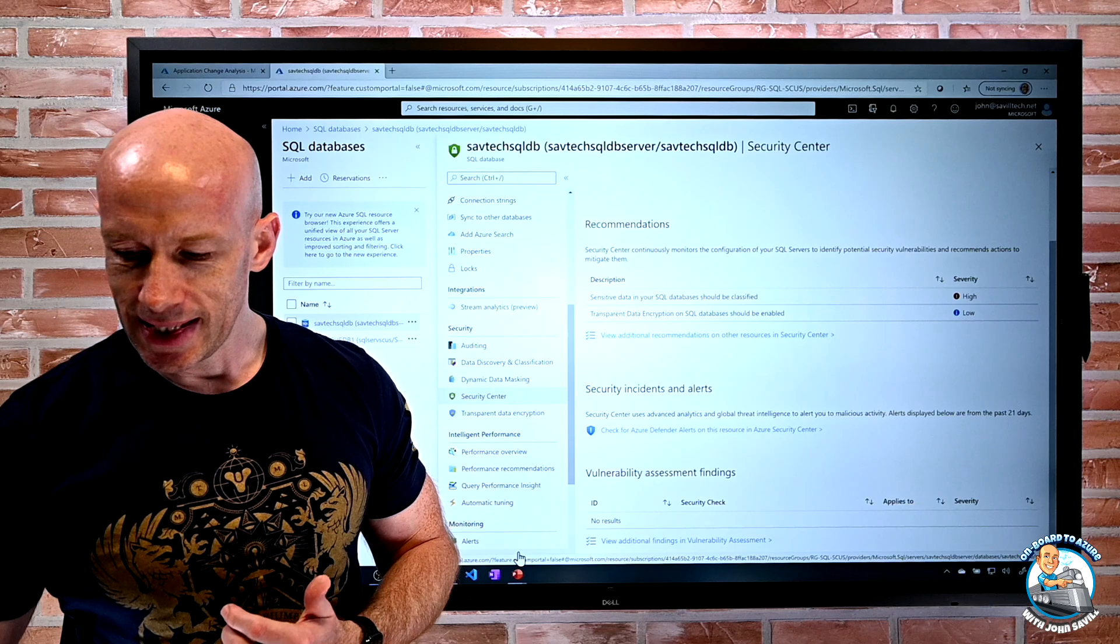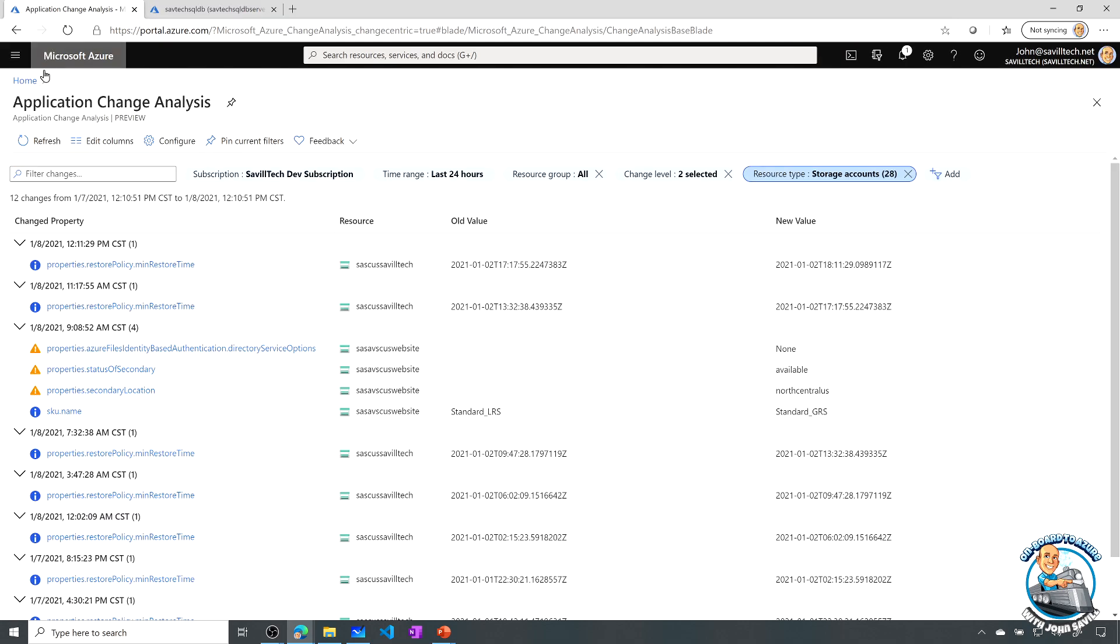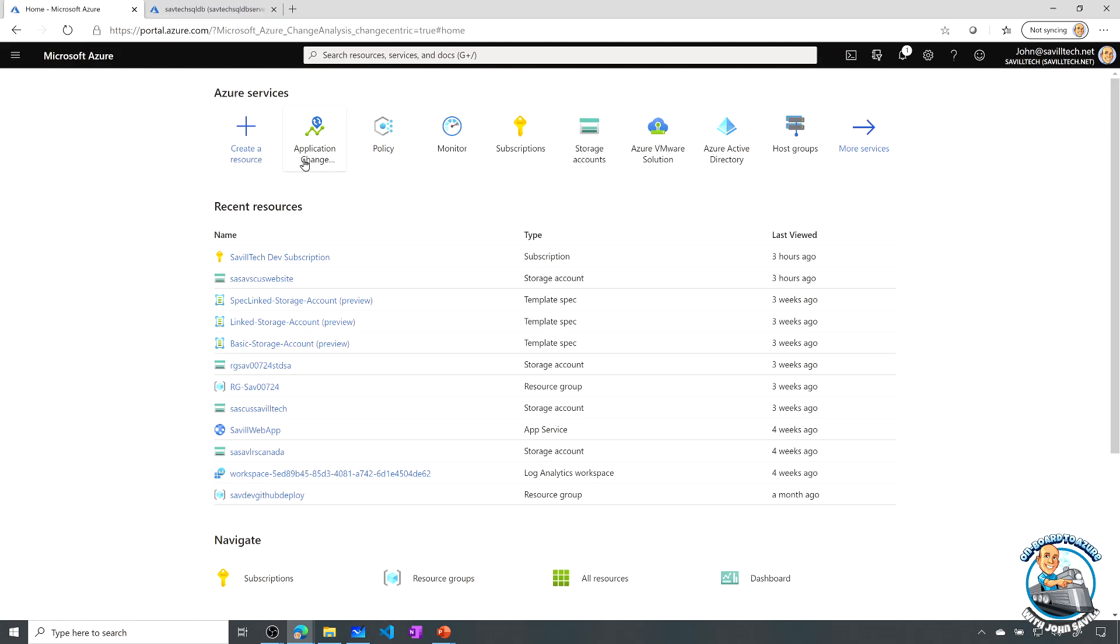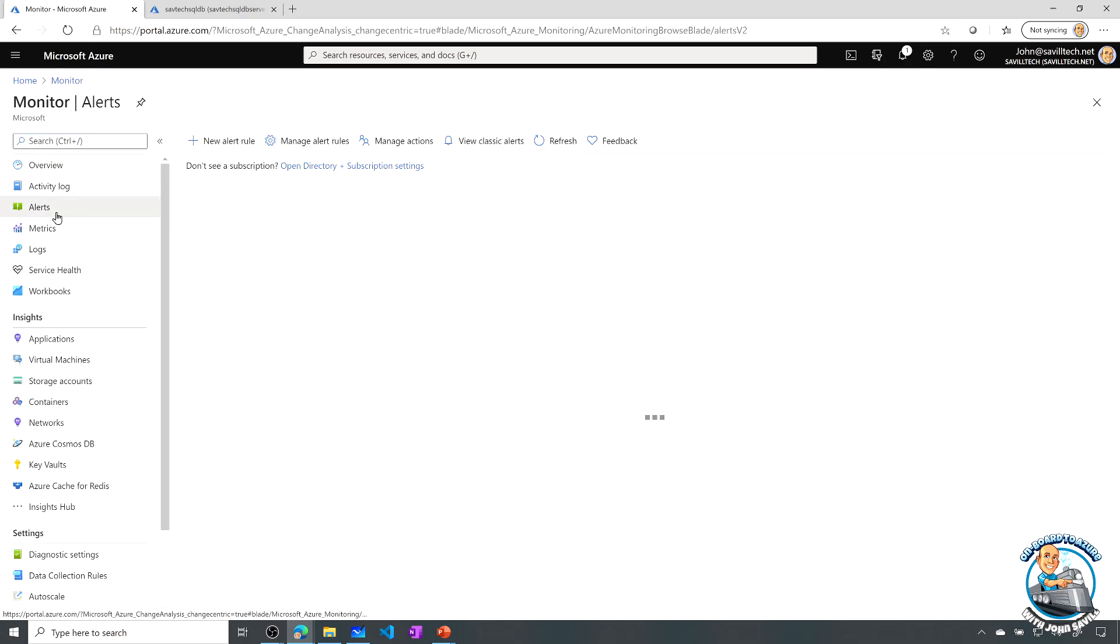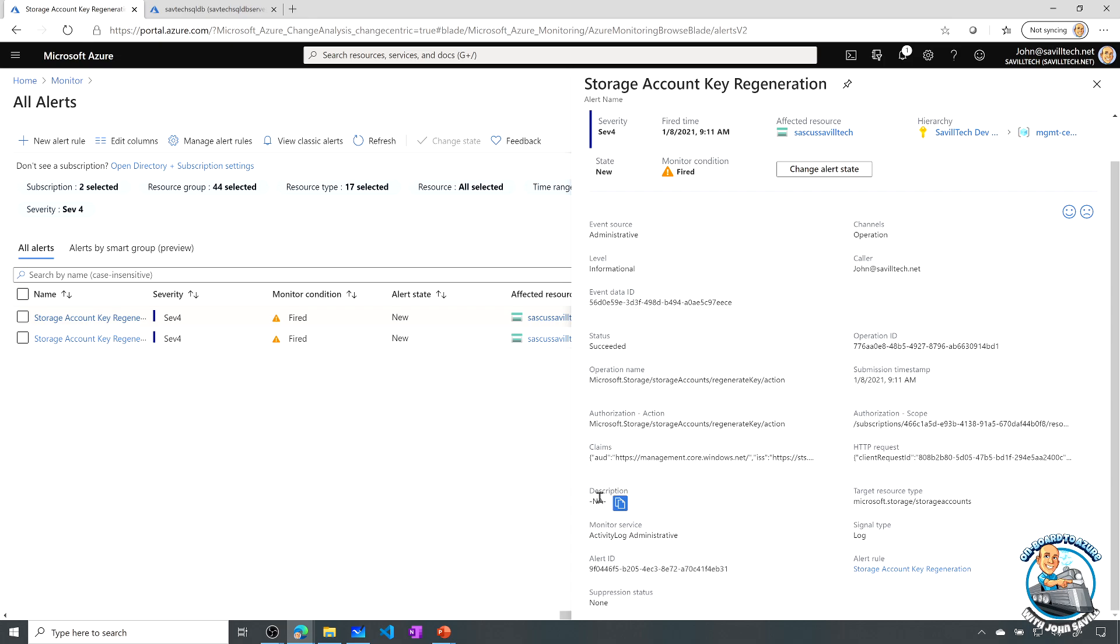So if I look today, let's jump over to this. If I quickly just go to, for example, if I go to monitoring over here, and I look at my alerts, and I triggered one earlier just by changing the storage account key, you can see right now the description isn't really anything, and there's this blank area over here.